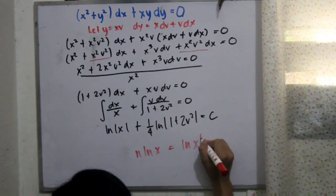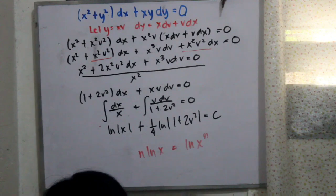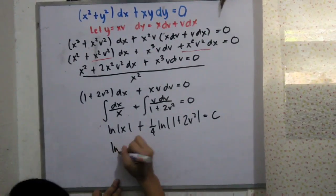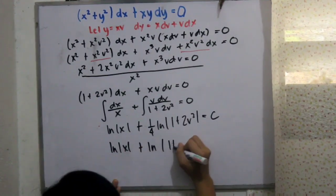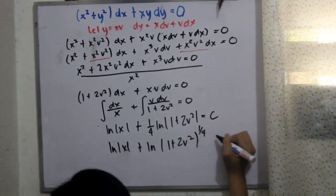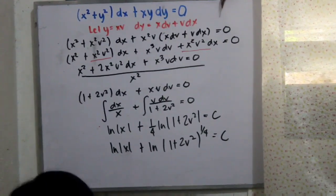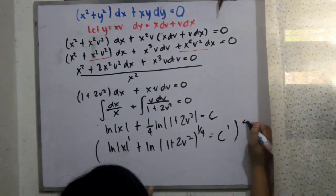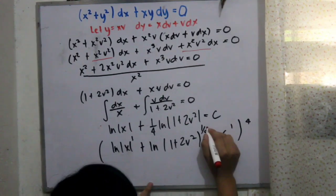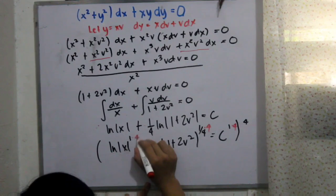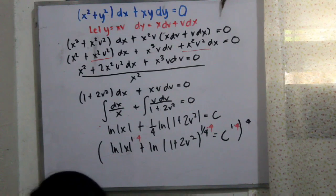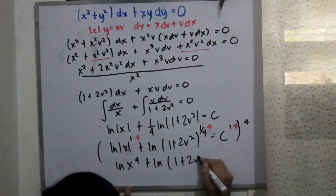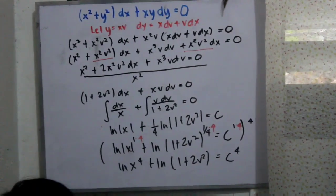The rule states that n times ln x equals ln x raised to n. So we make one fourth an exponent. Since we don't want a fractional exponent, we multiply all exponents by 4, leaving us with ln x raised to 4 plus ln of 1 plus 2v squared, where each exponent becomes 1, and the constant becomes c raised to 4.